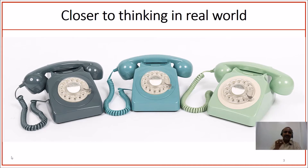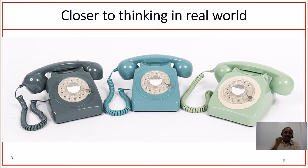You have three different telephone objects in front of you. Each of these telephone objects is identified with a unique telephone number. There are certain attributes or data points that describe these phones — the color, size, length of the cable, length of the headset. There are certain functions each of these objects performs, that is ringing.